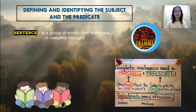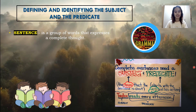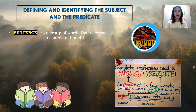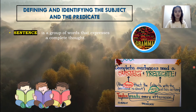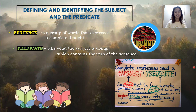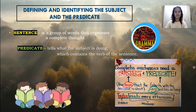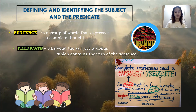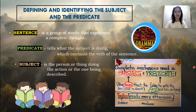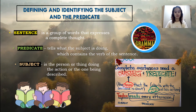Let's define first what is a sentence, a subject, and a predicate. A sentence is a group of words that expresses a complete thought. A predicate tells us what the subject is doing, and also contains the verb of the sentence. A subject is the person or thing doing the action or the one being described.